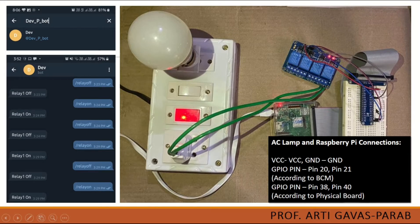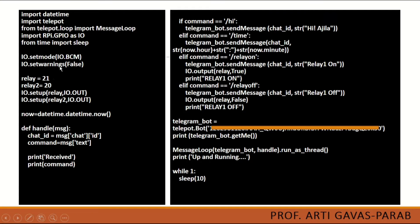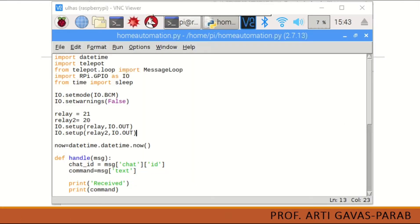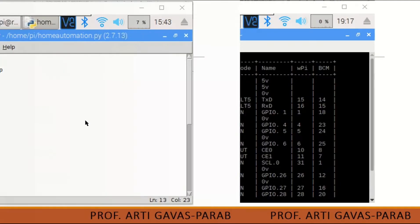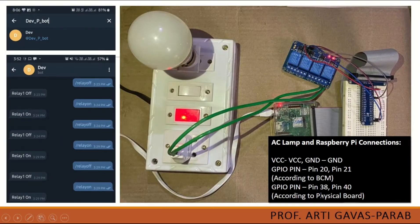To connect the circuit, connect the VCC to any positive pin, and the ground pin to any ground pin available. GPIO pins are pin 20 and 21 according to BCM, and pin 38 and 40 according to BOARD. If you specify io.BOARD in the program instead of BCM, you will use pin numbers 38 and 40 on the physical board.